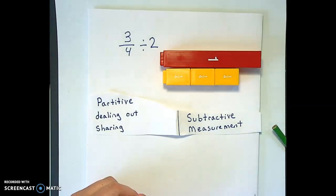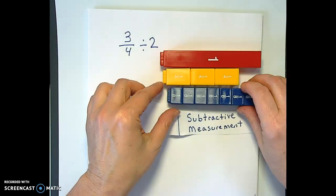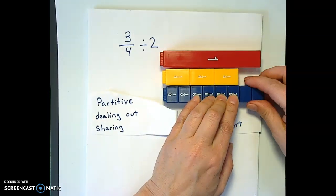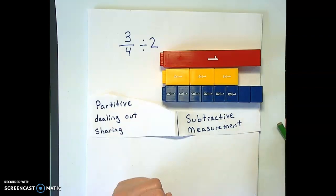In order to make it break evenly rather than having quarters, it would be nice if we had eighths, right? So right here 3 quarters is the same thing as how many eighths? Yes, 6 eighths.